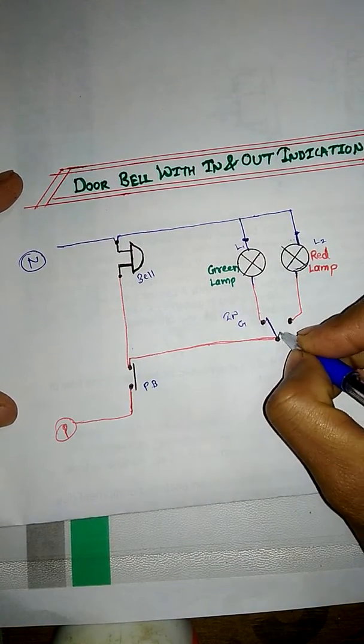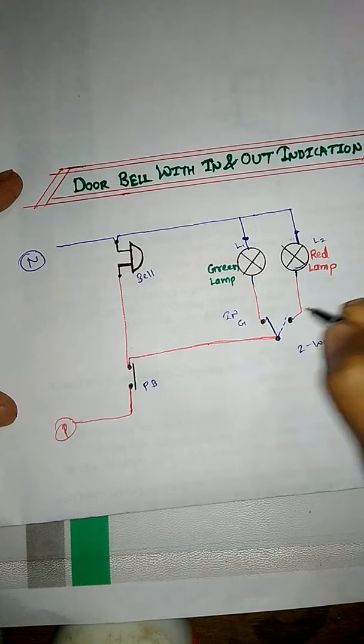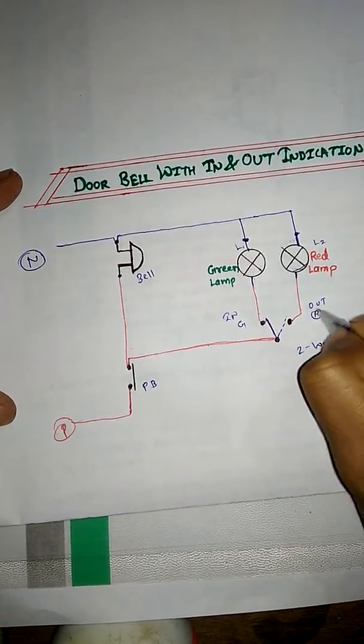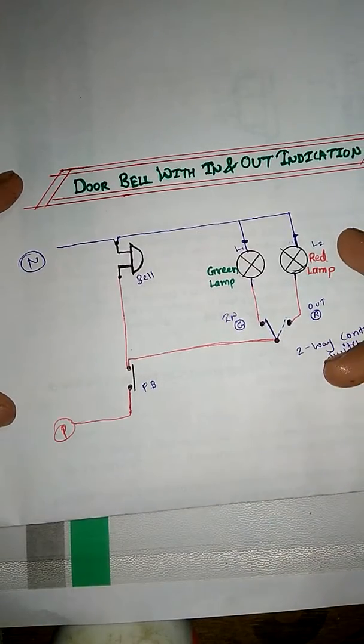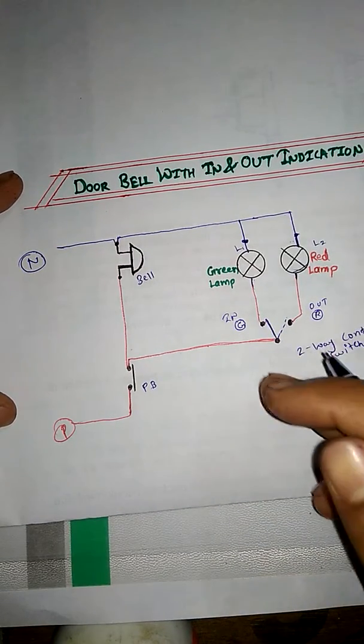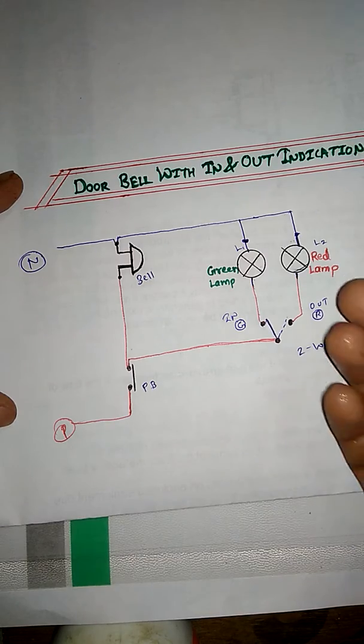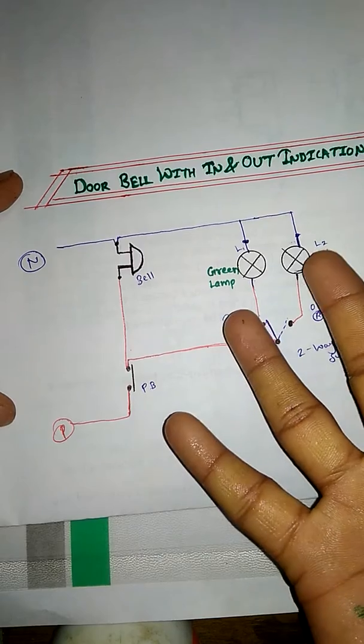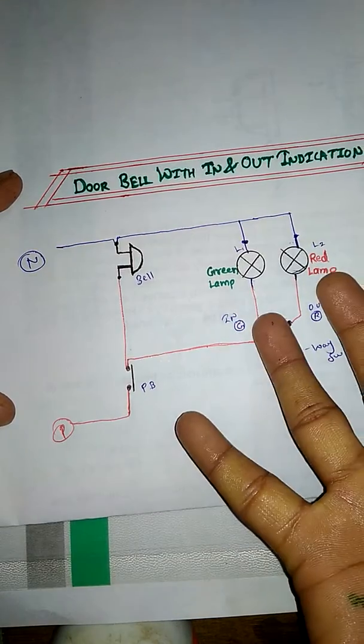Now if we turn the position to red, that is out, you will get the red signal at the outside. That means if someone is not knowing whether you are inside or outside the house, these two lamps will indicate the same.